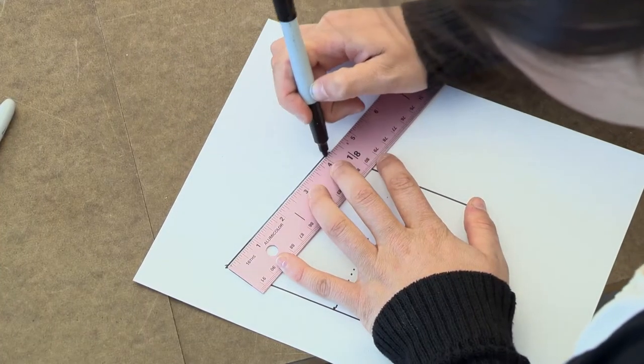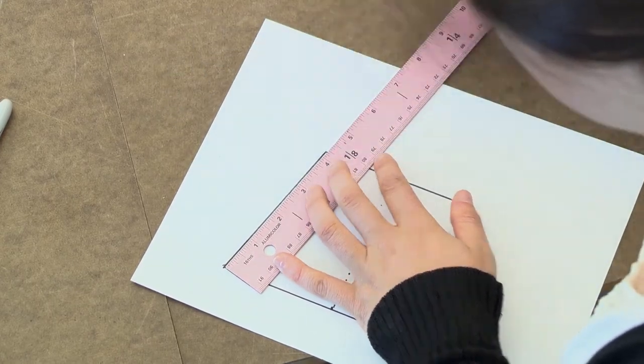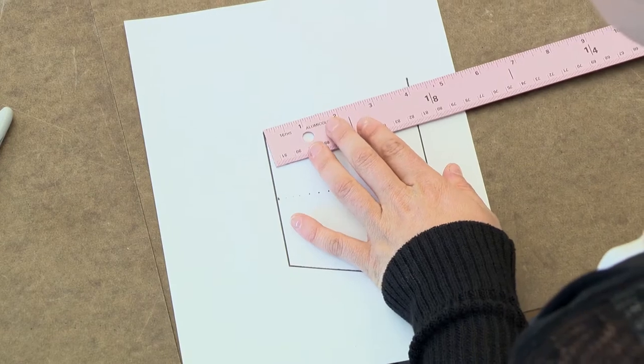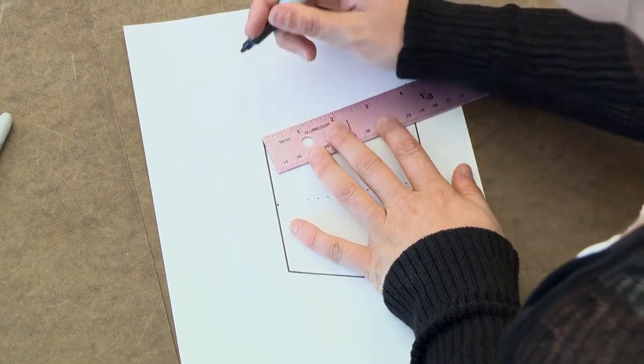We recommend that you draw your bridge out first on a piece of paper so that as you're cutting up the pieces of wood, you have a map of where you're going.